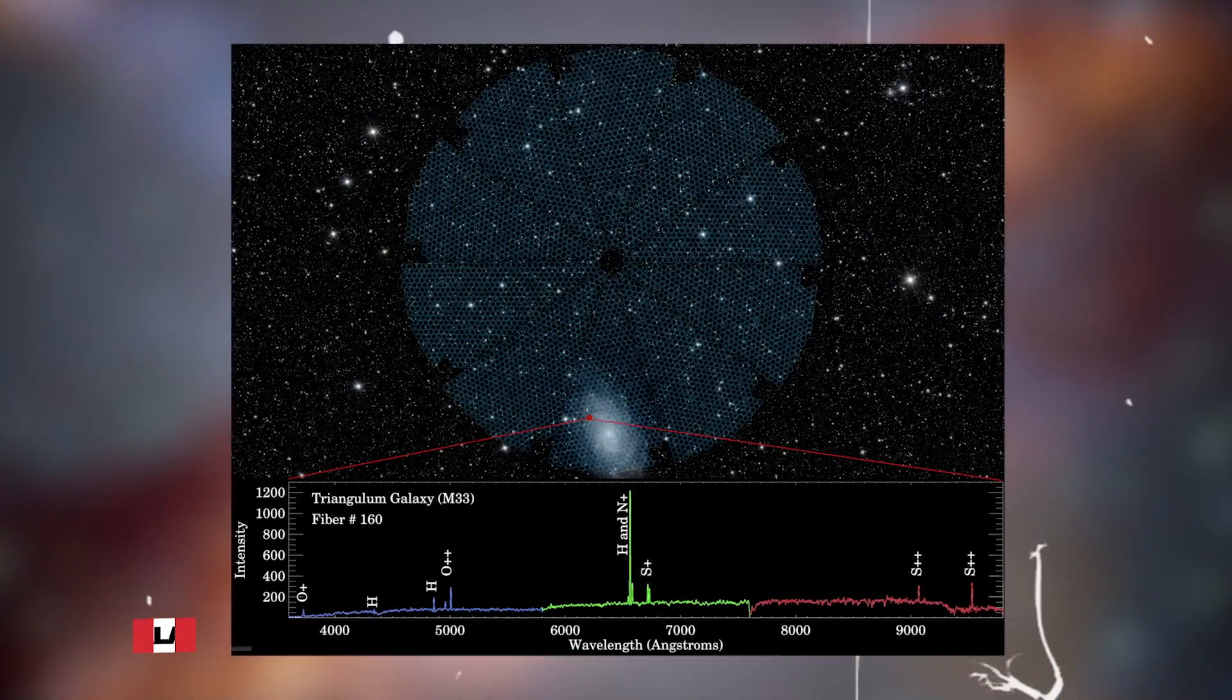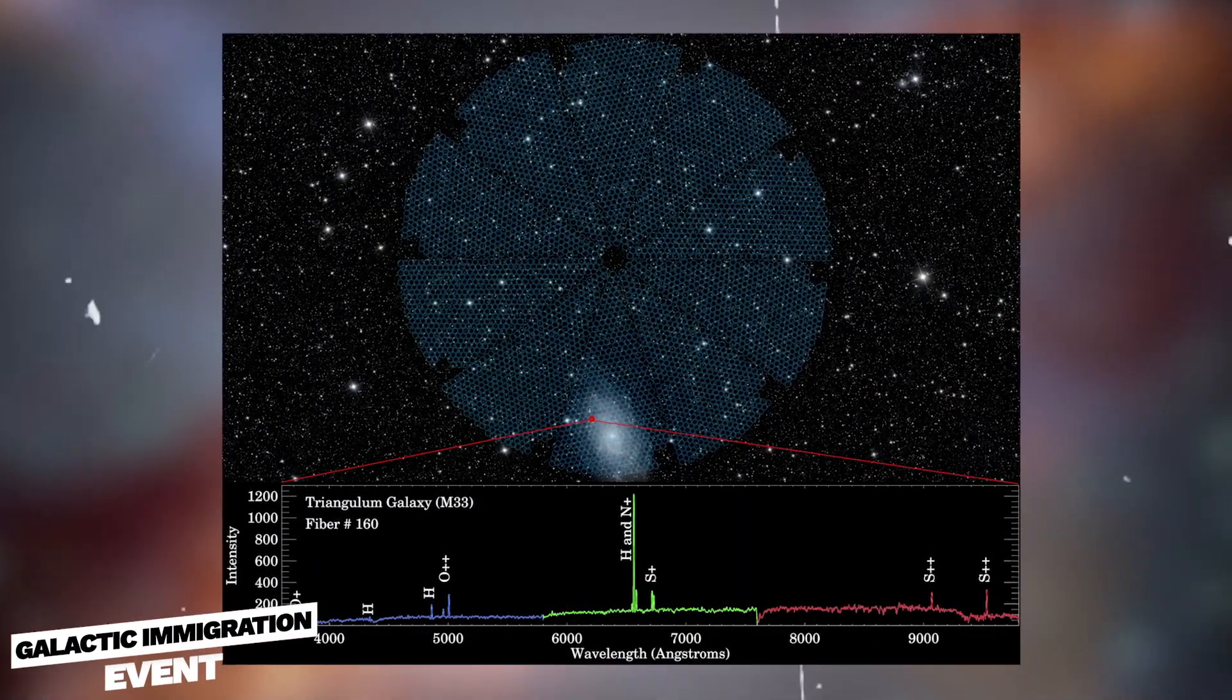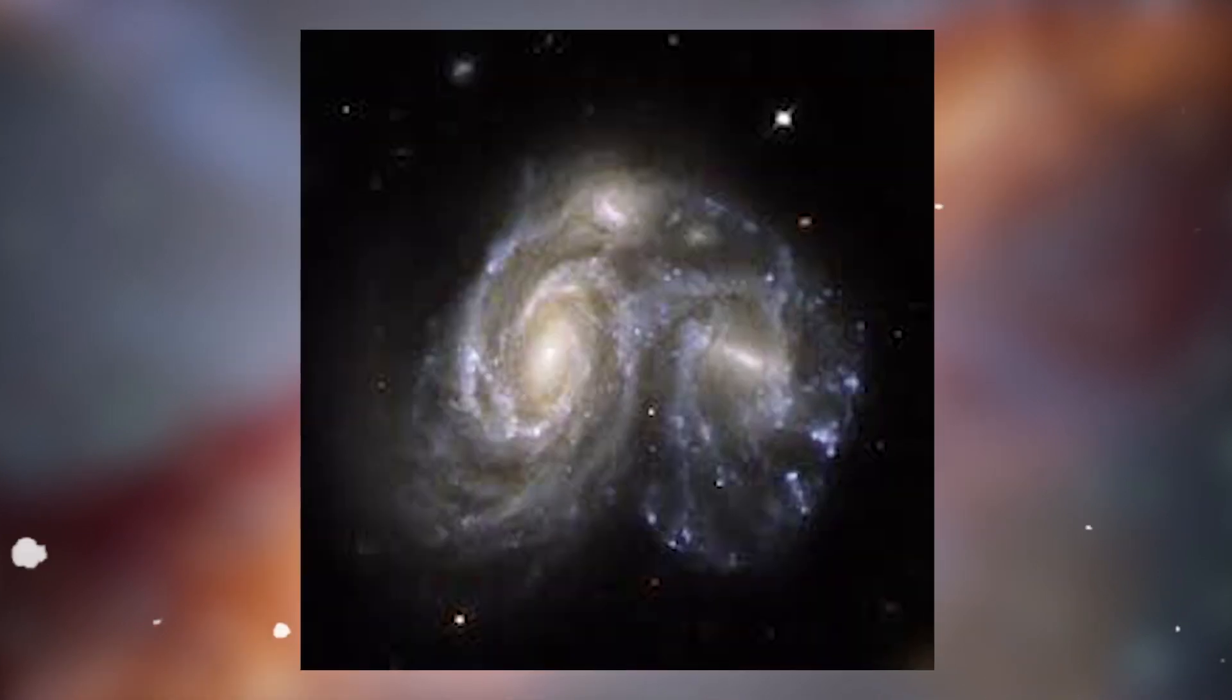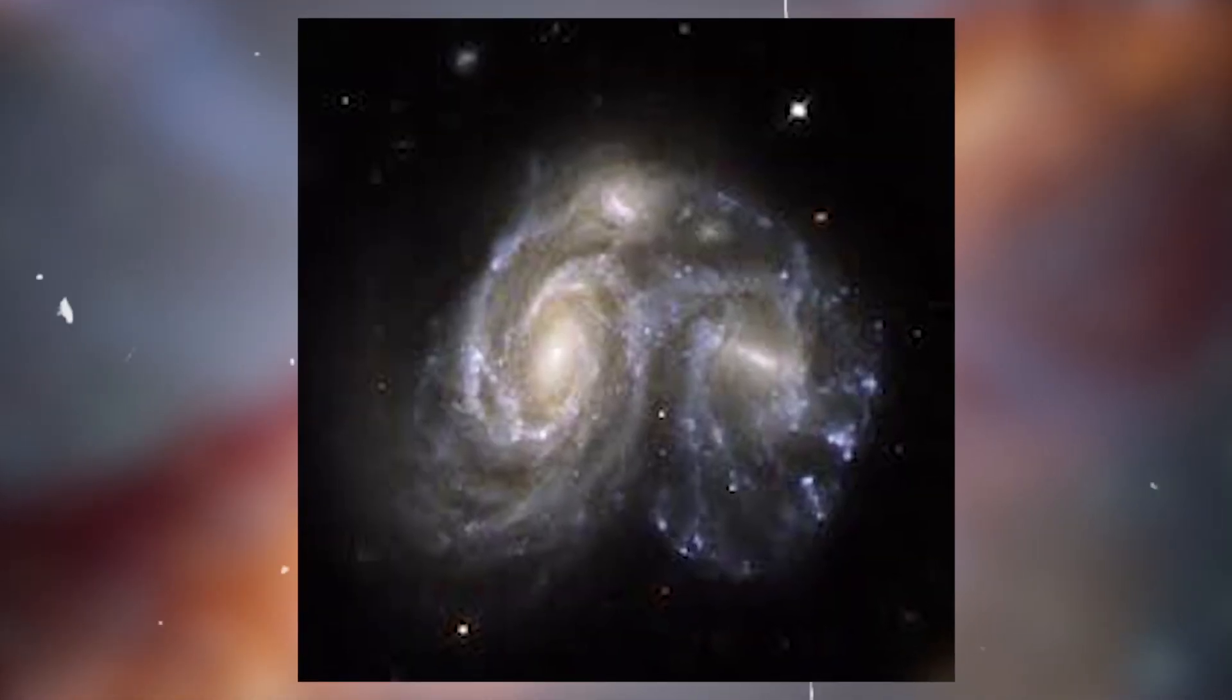This map provides insight into the galaxy's growth and evolution, revealing evidence of a galactic immigration event that occurred around 2 billion years ago, when another galaxy merged with Andromeda.